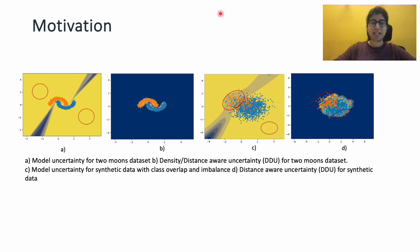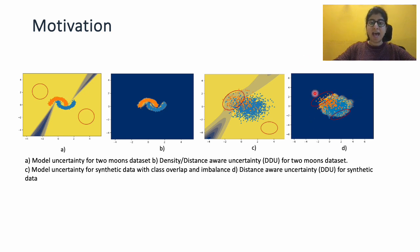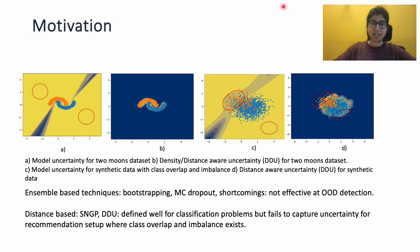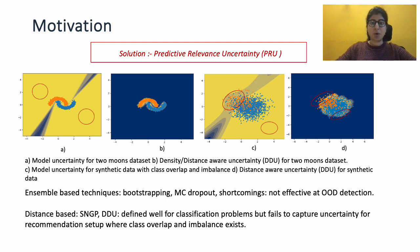We then simulate the behavior of class overlap and imbalance observed in the recommendation system. In this setting, both model and distance-aware uncertainty fail to capture the correct notion of uncertainty. We observe high uncertainty for the minority class and OOD samples in Figure C. Distance-aware uncertainty also fails because uncertainty will be lowest in the class overlapping region, as the training data distribution is concentrated mostly for both classes in that region.